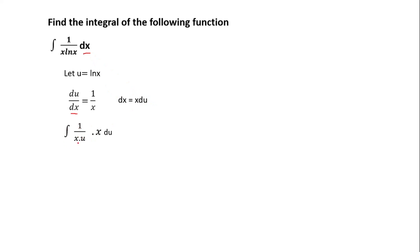That will be the integral of 1 over x times u. Now we know that ln x is now u. So you are going to replace it with u times x du. So this x will cancel this x, leaving 1 over u du.